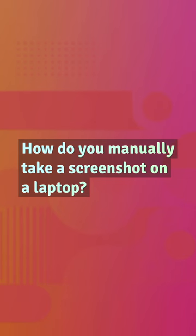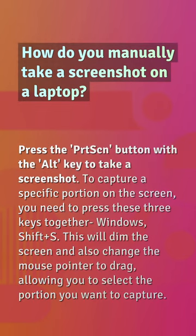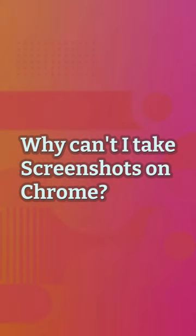How do you manually take a screenshot on a laptop? Press the PrtScn button with the Alt key to take a screenshot. To capture a specific portion of the screen, press these three keys together: Windows + Shift + S. This will dim the screen and change the mouse pointer to a drag tool, allowing you to select the portion you want to capture.